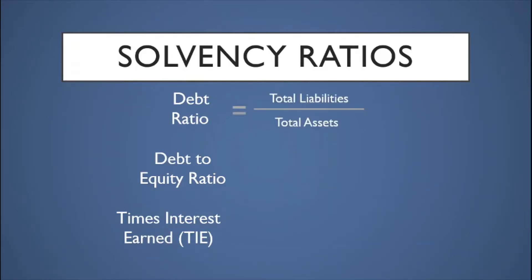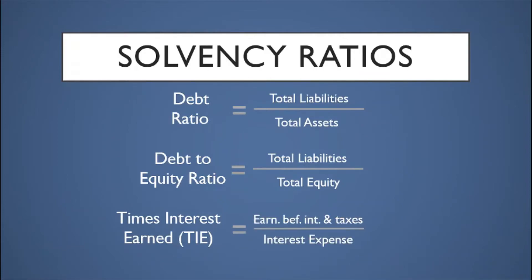The common solvency ratios are: the debt ratio, which equals total liabilities over total assets; the debt-to-equity ratio, which equals total liabilities over total equity; and the times interest earned (TIE) ratio, which equals earnings before interest and taxes (EBIT) divided by interest expense.